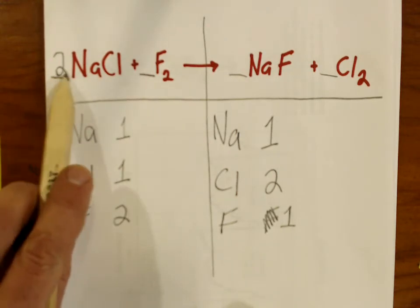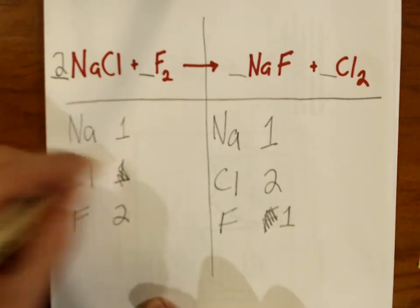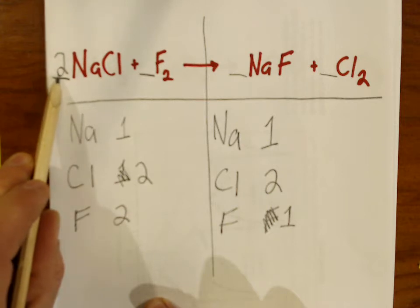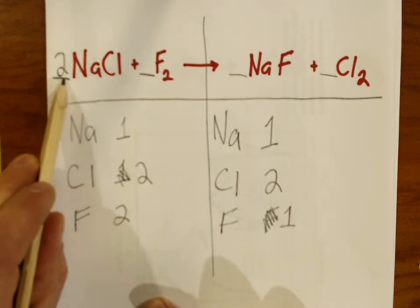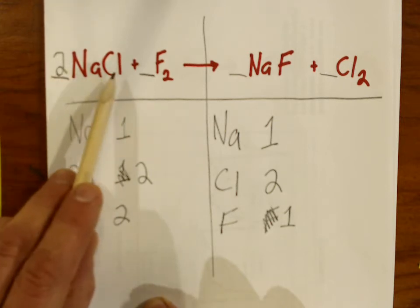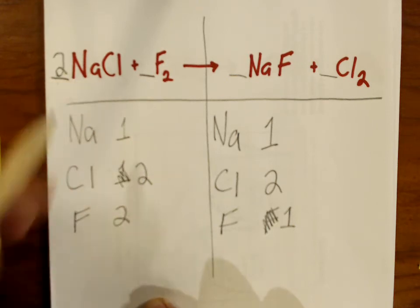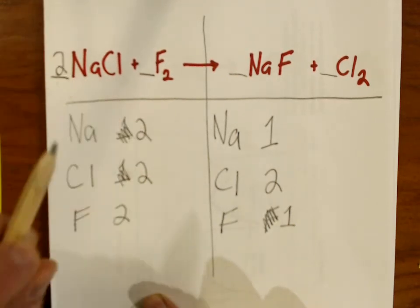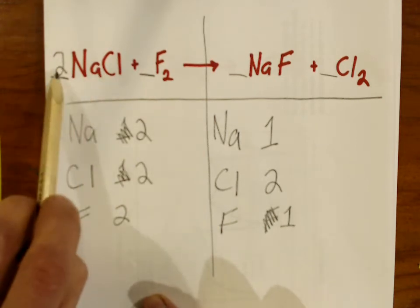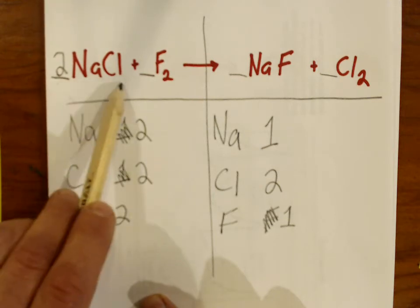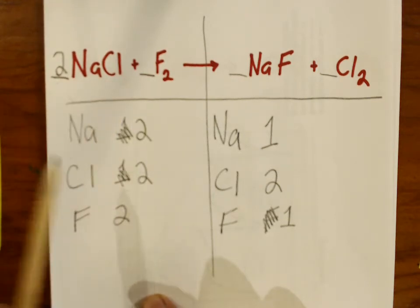Because I put a two in front of this formula that contains chlorine, I'm going to change this to two. But the coefficient two actually applies to all of the elements. So this two not only doubles the amount of chlorine atoms on the reactant side, but it also doubles the amount of sodium atoms on the reactant side. Big rule: when you write a coefficient, it affects the amount of atoms of all elements in the compound that the coefficient is in front of.